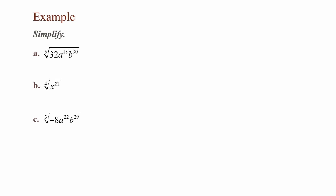In these examples, we want to simplify. Part A, I have the 5th root of 32a to the 15th b to the 30th. 32 is a perfect 5th root. A to the 15th: 15 is a multiple of 5. B to the 30th: 30 is a multiple of 5. The 5th root of 32 is 2, 15 divided by 5 is 3, and 30 divided by 5 is 6. Final answer: 2a to the 3rd b to the 6th.